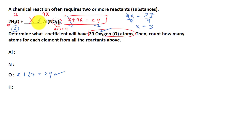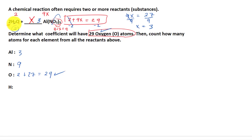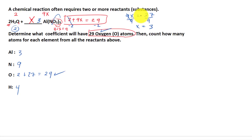For aluminum, 3 times 1 gives us 3. For nitrogen, we have 3 times 1 right there — that's 3 — but then we multiply by 3, giving us 9. For hydrogen, 2 times 2 gives us 4. That is how you apply mathematical skills to solve for the coefficient in a chemical formula — expressing the unknown as a variable to solve for the coefficient.